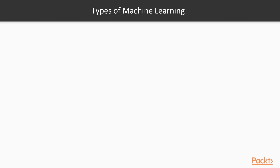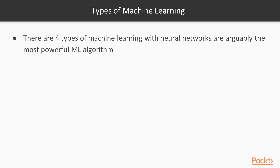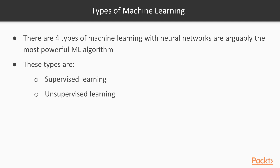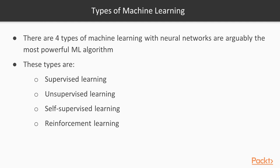So now let's talk about the four types of machine learning. Arguably the most powerful machine learning algorithm is neural networks, and neural networks are the same thing as deep learning, but we'll discuss that more later on. The four main types are: supervised learning, unsupervised learning, self-supervised learning, and reinforcement learning.